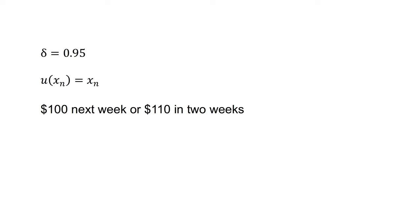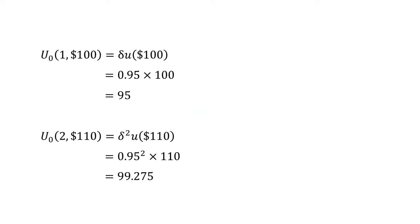The second choice is whether this agent would prefer $100 next week, at t equals 1, or $110 in two weeks, at t equals 2. The discounted utility of the $100 next week is u0(1,100), equals delta times utility of 100, equals 0.95 times 100, equals 95. The discounted utility of the $110 in two weeks is u0(2,110), which equals delta squared times utility of 110, equals 0.95 squared times 110, which equals 99.275. The exponential discounter will prefer to receive $110 in two weeks.